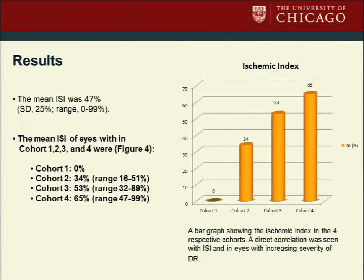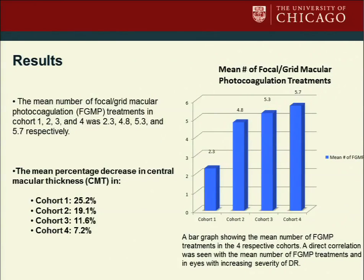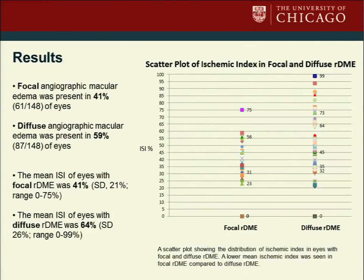Our results were as follows. The bar graph shows the ischemic index in the four respective cohorts, and we find a direct correlation between the ischemic index and increasing severity of diabetic retinopathy. The mean number of focal laser treatments in the four respective cohorts also shows the same direct correlation — the worse stage the patient has, the more laser treatments were necessary over the course of two years. We found focal versus diffuse diabetic macular edema at 41 versus 59%, and the mean ischemic index in the focal group was 41%, while the mean ISI in the diffuse group was 64%. With worsening grade of diabetic macular edema, the ischemic index in the periphery is worse.